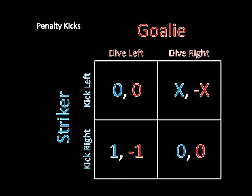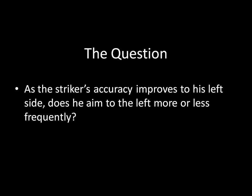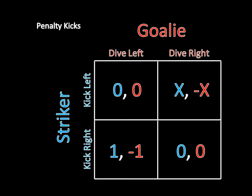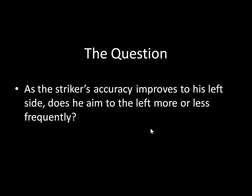The question I want to answer today is: as the striker's accuracy improves to his left side, does he aim to the left more or less frequently? Going back to the strategic form of the game, the question is asking, as we increase the value of X — where X is the accuracy of the kicker to his left side — what does the kicker do in equilibrium? The way we answer these types of questions is through a process known as Comparative Statics.